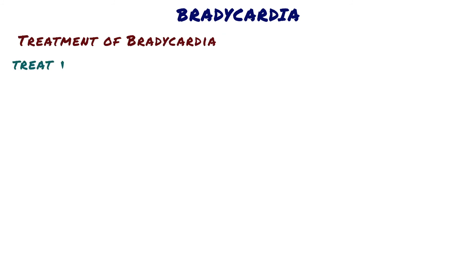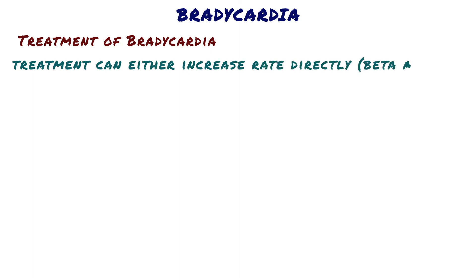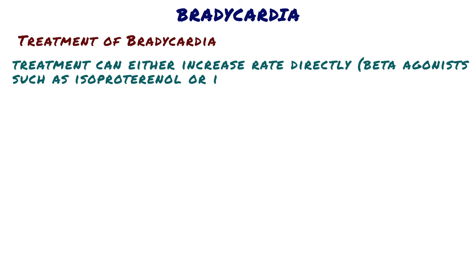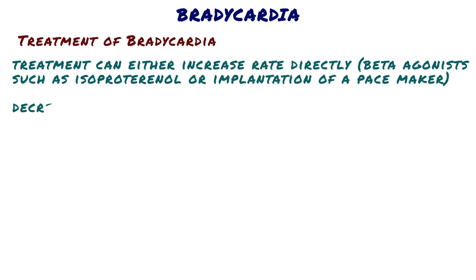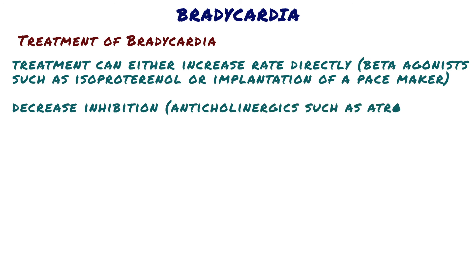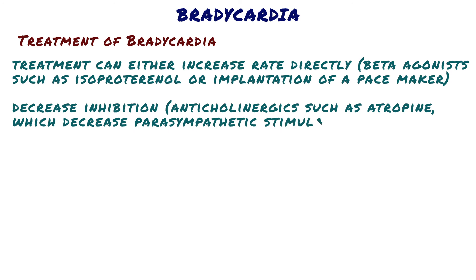Treatment can either increase rate directly — beta agonists such as isoproterenol, or implantation of a pacemaker — or decrease inhibition via anticholinergics such as atropine, which decrease parasympathetic stimulation of the heart.